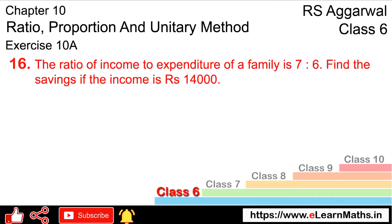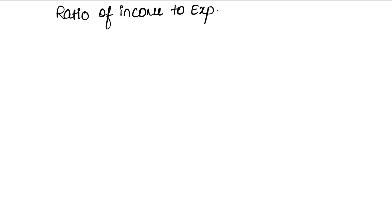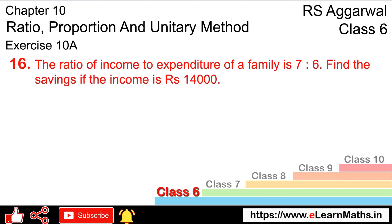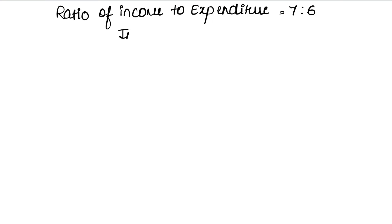Let's do question number 16 of exercise 10A, that is ratio and proportion. Question number 16: the ratio of income to expenditure of a family is given as 7 is to 6. We have to find the saving if the income is rupees 14,000. So the ratio of income to expenditure is 7:6 and income is 14,000.